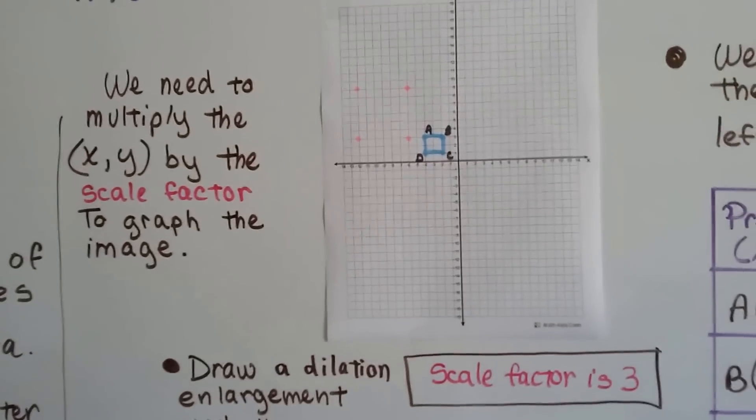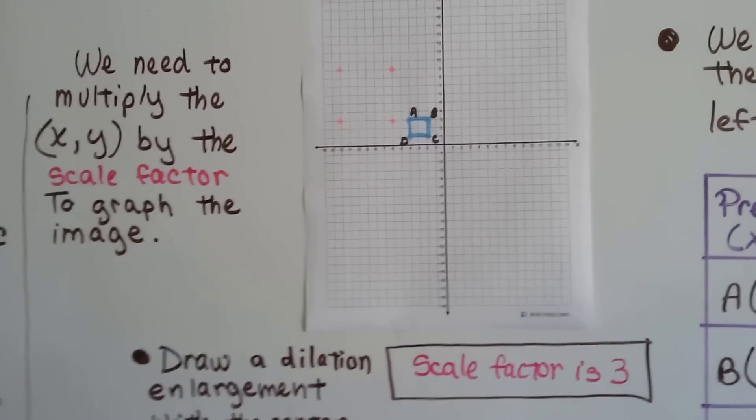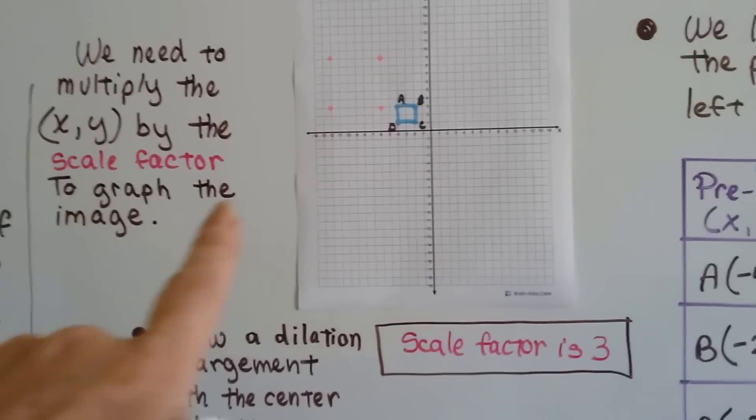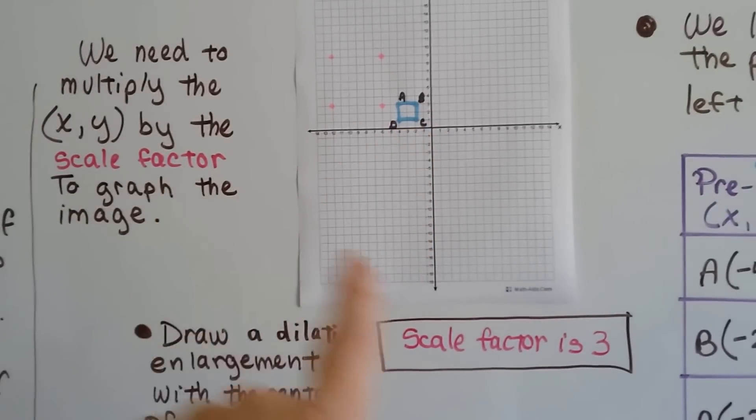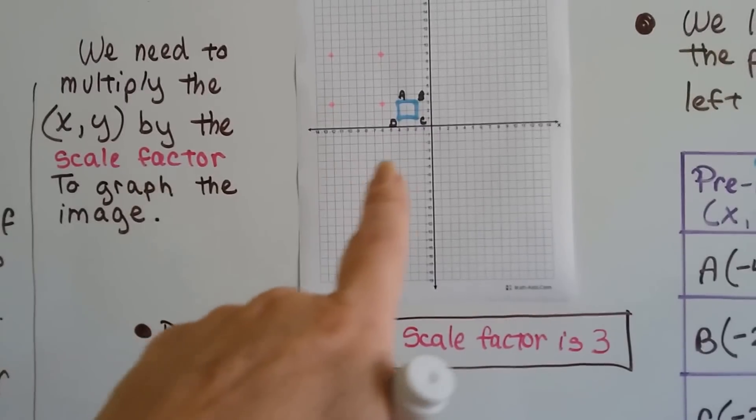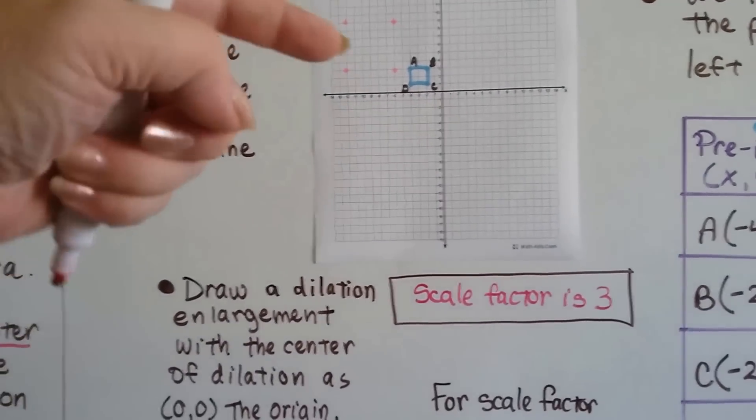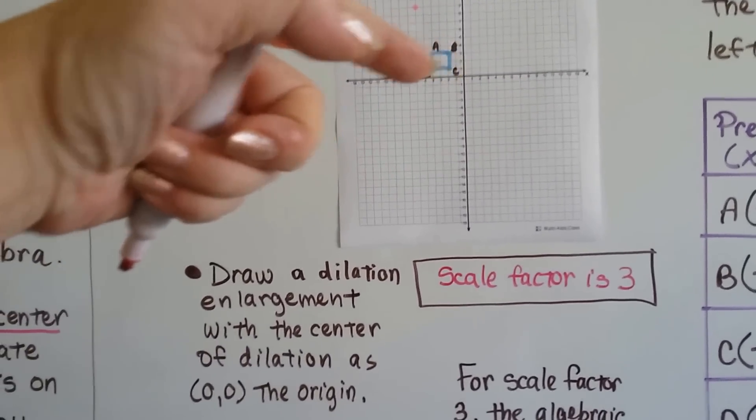If we want to dilate this blue square by a scale factor of 3, we need to multiply its x and y values by that scale factor, the 3, to graph the new image. So we're going to draw a dilation, an enlargement, with the center of dilation as 0, 0, the origin.